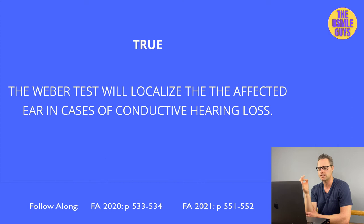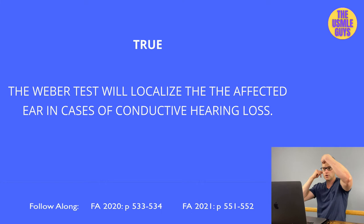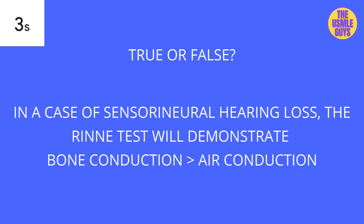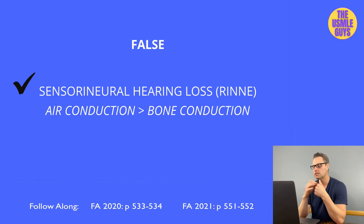You can mimic conductive hearing loss by covering one ear — the tuning fork on the head will localize to that covered side. This is how the Weber test helps identify conductive versus sensorineural hearing loss based on localization of the perceived vibration.